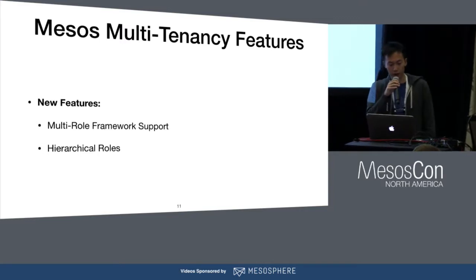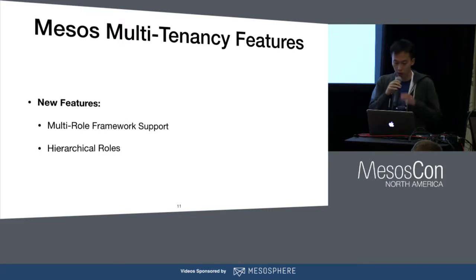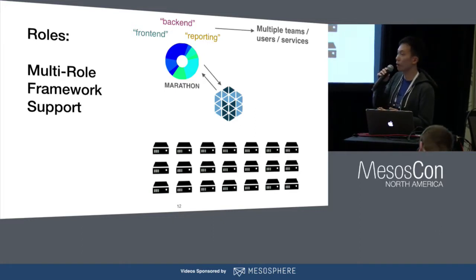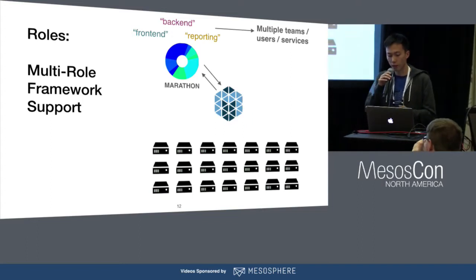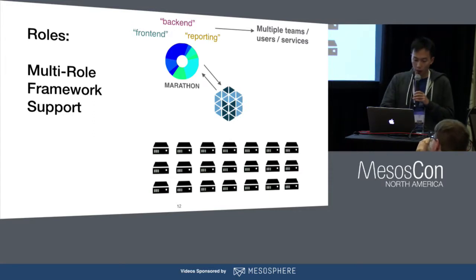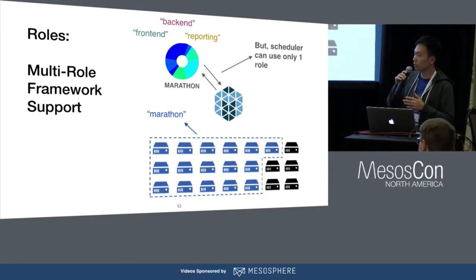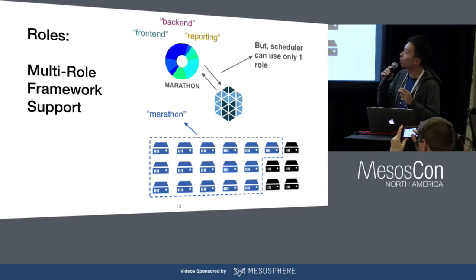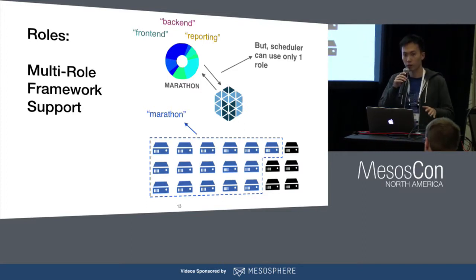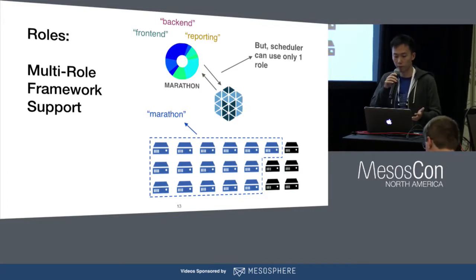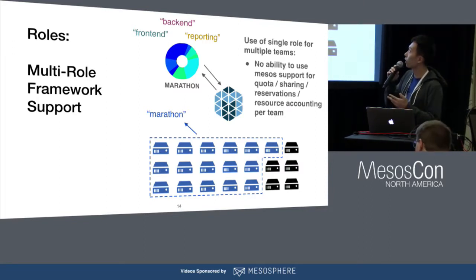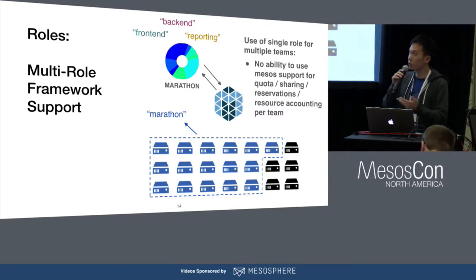I'm going to introduce the newly added features: multi-role framework support and hierarchy of roles in more detail. Normally you might have multiple teams sharing one Marathon instance, and that Marathon subscribes to Mesos. These teams launch different applications and services, but from Mesos's point of view it only knows Marathon subscribes with one role. So Mesos only knows there are jobs running under the role 'Marathon,' but doesn't know that front-end, back-end, and reporting teams are all launching different workloads. The problem is you cannot enforce quota or reservations for these different teams because Mesos simply doesn't know about them.